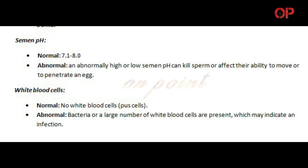Semen pH — Normal: 7.1 to 8.0. Abnormal: An abnormally high or low semen pH can kill sperm or affect their ability to move or to penetrate an egg. White blood cells — Normal: No white blood cells or pus cells. Abnormal: Bacteria or a large number of white blood cells are present, which may indicate an infection.